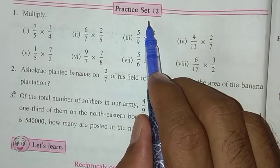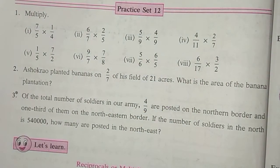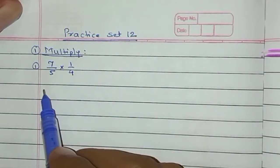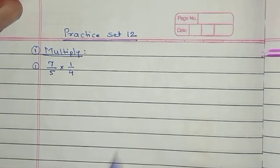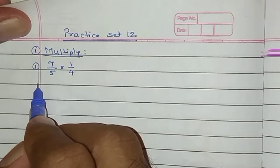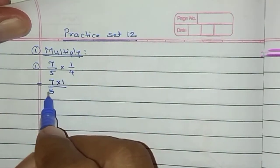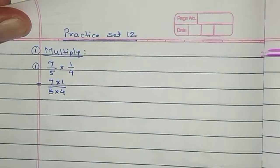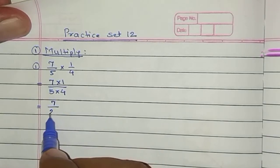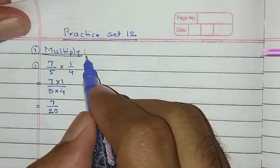Next, practice set 12. This I will explain in the notebook. Question number 1: first example is 7/5 multiplied by 1/4. The rule is numerator multiplied by numerator — 7 multiplied by 1 — upon denominator multiplied by denominator — 5 multiplied by 4. The answer is 7 upon 20. Since 7 is a prime number, we cannot reduce this fraction further. This is our final answer.